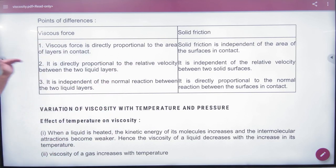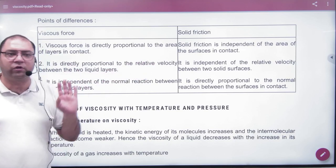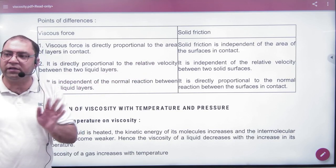Next, liquid friction is directly proportional to the relative velocity between the two liquid layers. So the viscous force, the liquid friction is proportional to relative velocity - the velocity difference. But solid friction is independent of velocity.